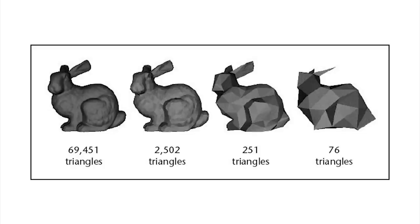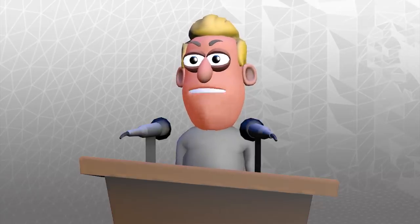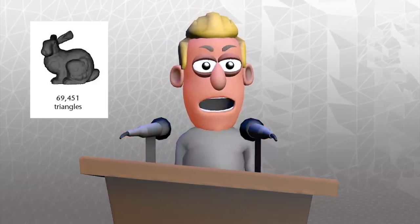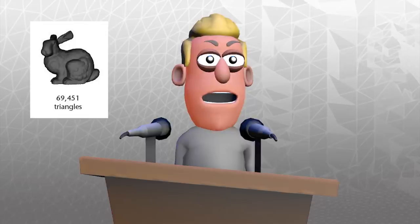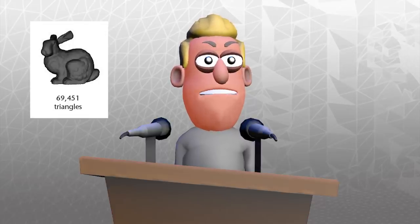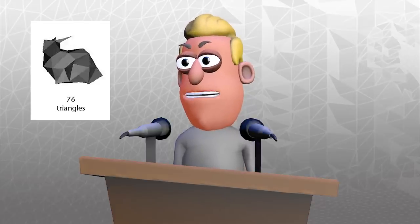This is demonstrated in this example featuring a bunny that we'll call Nigel. As you can see, each model represents exactly the same bunny. These four models would represent the different levels of detail in the LOD group. The closer the object is to the camera, the higher the level of detail shown to the player. So if in a game we're standing right next to Nigel, we'll be shown the version with 69,451 polygons. But if Nigel's right at the other end of the level, we'll only see the 76 poly version.